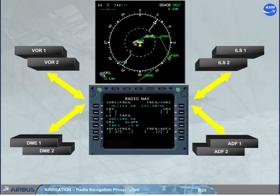For visual display, the radio nav page displays the navaids auto-tuned. But the crew may force the navaids to be manually tuned, as shown.